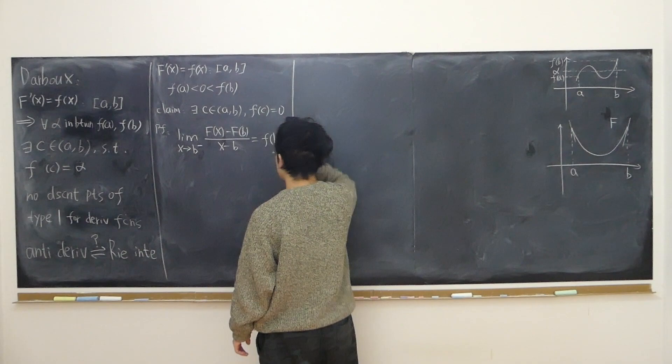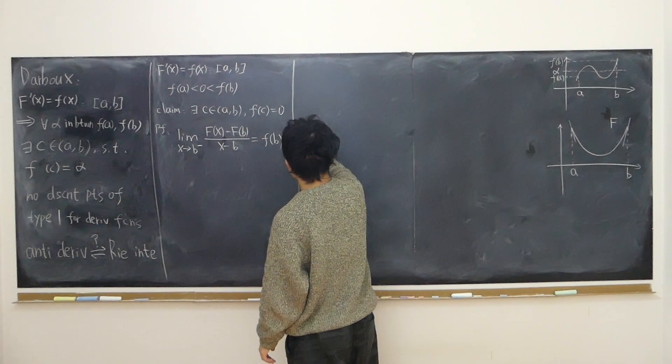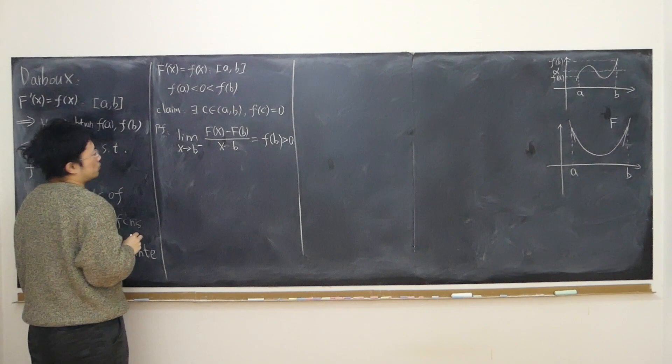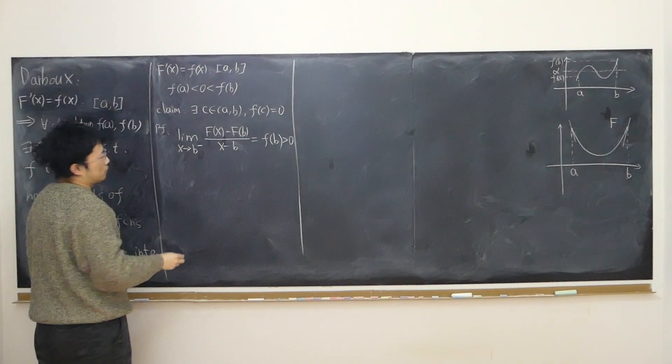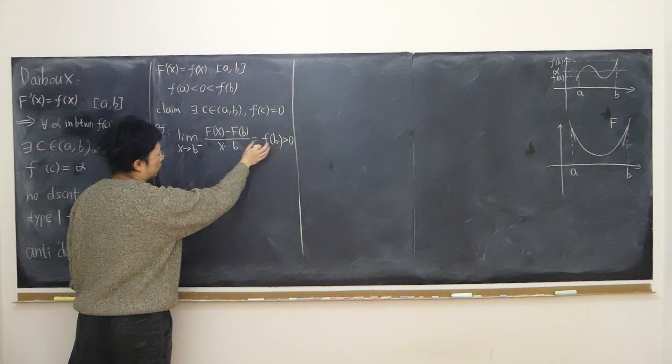Little f(b) is assumed to be larger than zero. The key property of limits is that when x is close enough to B, this inside expression can also be close enough to f(b). In other words, this expression can also be strictly larger than zero.